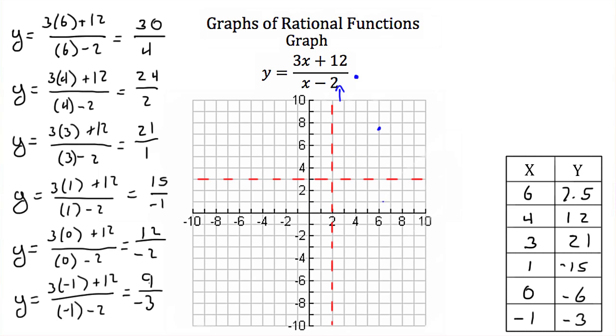Now 1 and negative 15 is off our graph again. But 0 and negative 6 is right here, and negative 1 and negative 3 is right there. Now because 1 and negative 15 is off our graph we know that this is getting very large as it approaches this asymptote again. So I can connect these with a smooth curve, and our graph should look something like that.